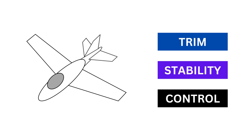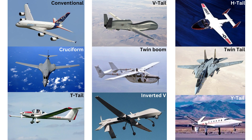Tails are like little wings which are there for providing trim, stability, and control to the aircraft. A lot of different tail configurations have been used throughout the history of aviation. Let's go through them one by one.